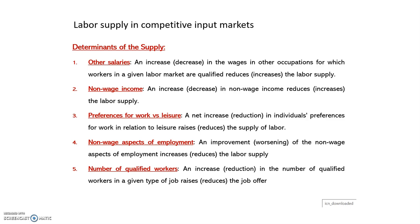The first determinant is wages in other occupations. Imagine that wages increase in other markets for which workers in a given labor market are qualified. This is going to reduce the labor supply in this market, because workers can move to another market. If wages increase in another sector, workers will prefer to work there, so the supply in our sector decreases.